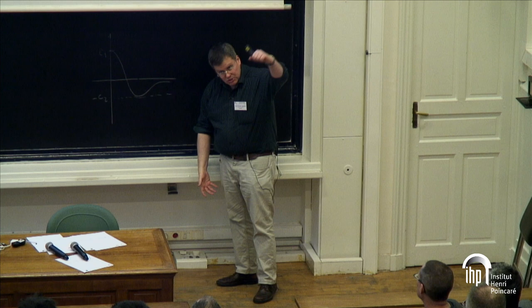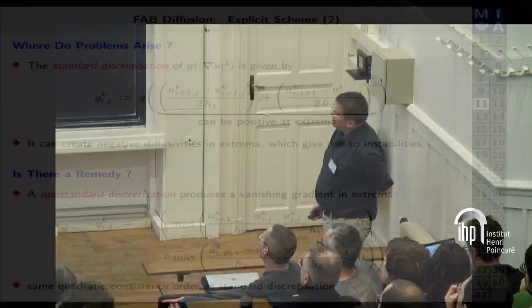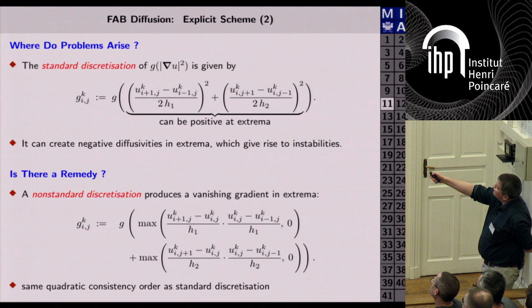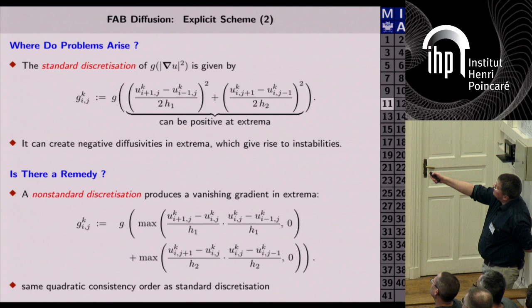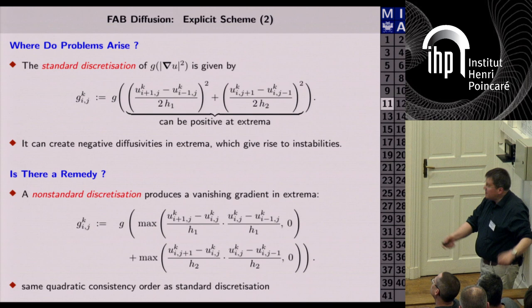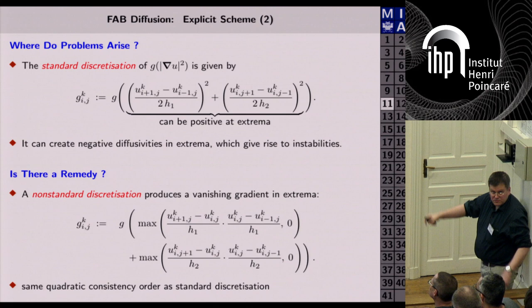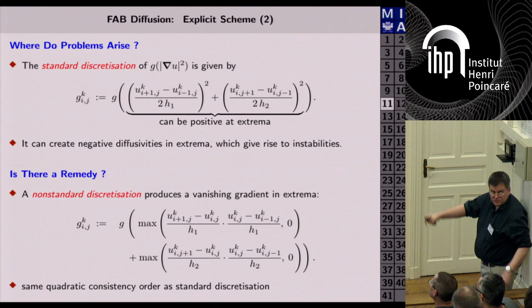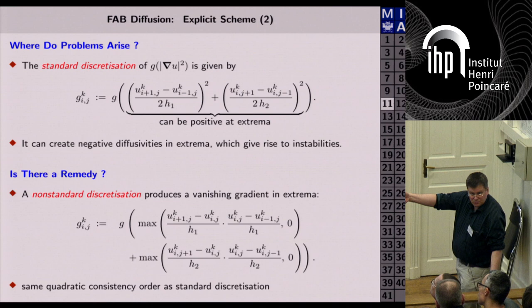A useful little modification solves this problem. Replace the standard squared gradient approximation with a non-standard discretization: the product of a forward difference times a backward difference. If this product is negative, you are at a discrete extremum, and you replace it by zero — similarly in both x and y directions. Consistency analysis shows this still has consistency order two. This guarantees that at discrete extrema the gradient approximation is zero, ensuring a positive diffusivity and thus no over- or undershoots.